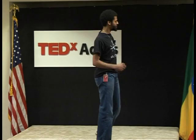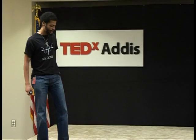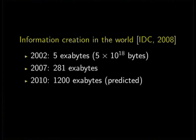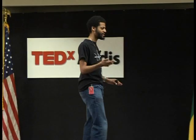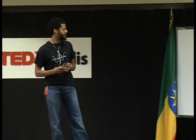So, information creation in the world. I'm looking at algorithms for processing massive amounts of data. I want to show you this trend observed by the research company IDC. Back in 2002, they estimated that the amount of information created in the world was five exabytes. An exabyte is a billion gigabytes. If you filled up a sheet of paper with about 1,000 letters, that would be about a million billion sheets of paper — that's one exabyte. And that was five exabytes in 2002.